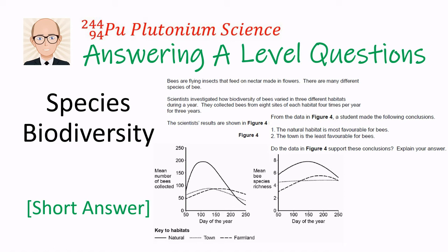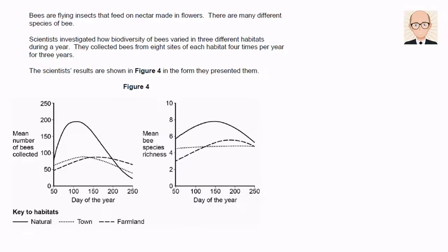I want to show you how to answer an exam question on species biodiversity. This question is about the biodiversity of bees. We're told that bees are flying insects that feed on nectar from flowers, and that there are many different species of bee. Scientists collected bees from three different habitats throughout the year for three years. The natural habitat was likely to have been wild meadow or woodland. The town and farm habitats would have much more human influence over them.